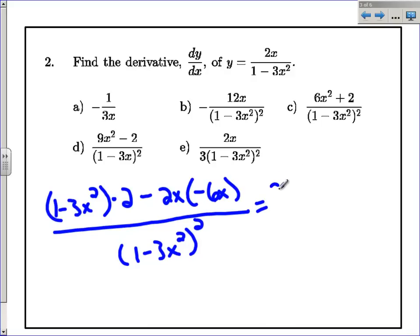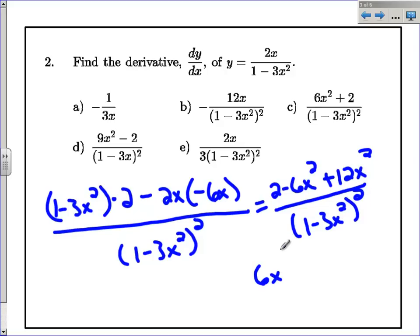Let's write it like that. So let's see if we can do some algebra here. Distribute our 2, we get 2 minus 6x squared. And then this is going to be plus 12x squared. Notice that was two negatives made a positive. All over 1 minus 3x squared squared. And this simplifies to 6x squared plus 2 over 1 minus 3x squared squared. And so it looks like that answer is C.